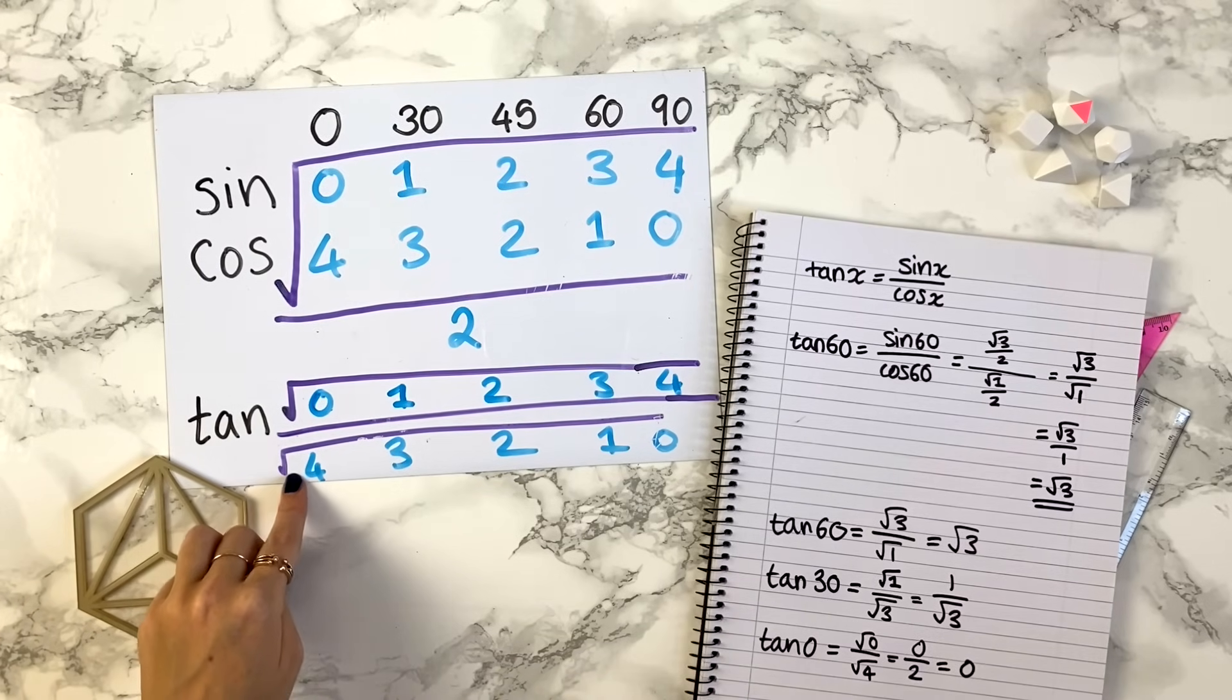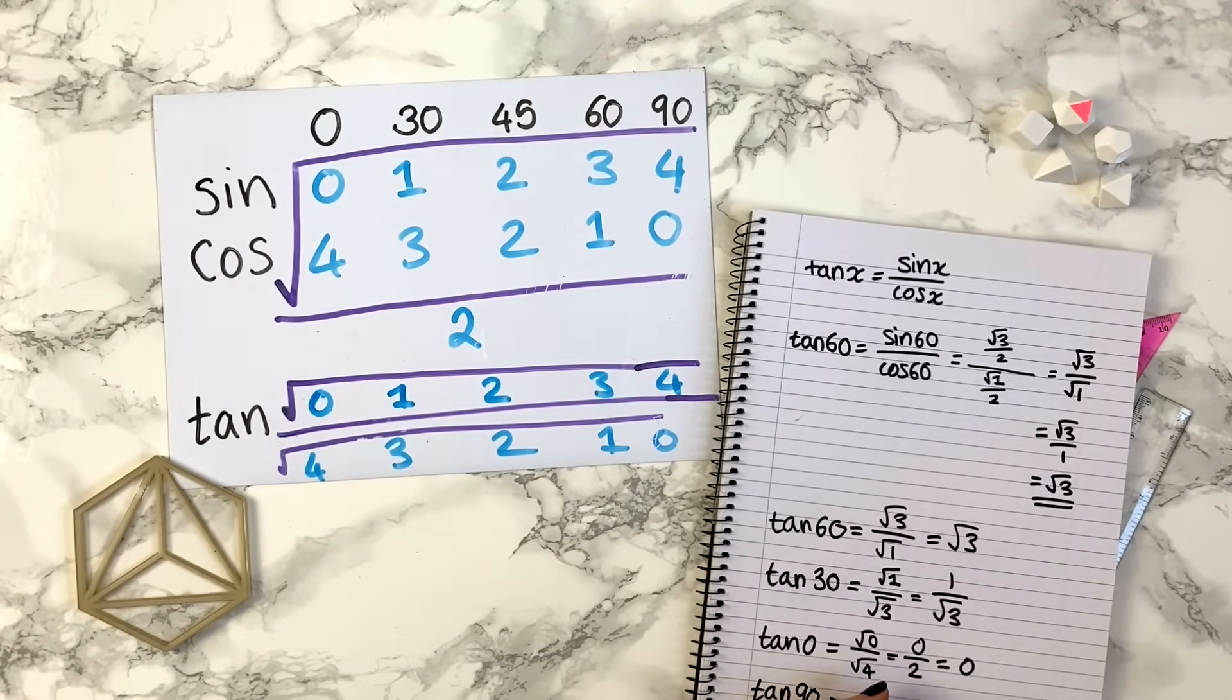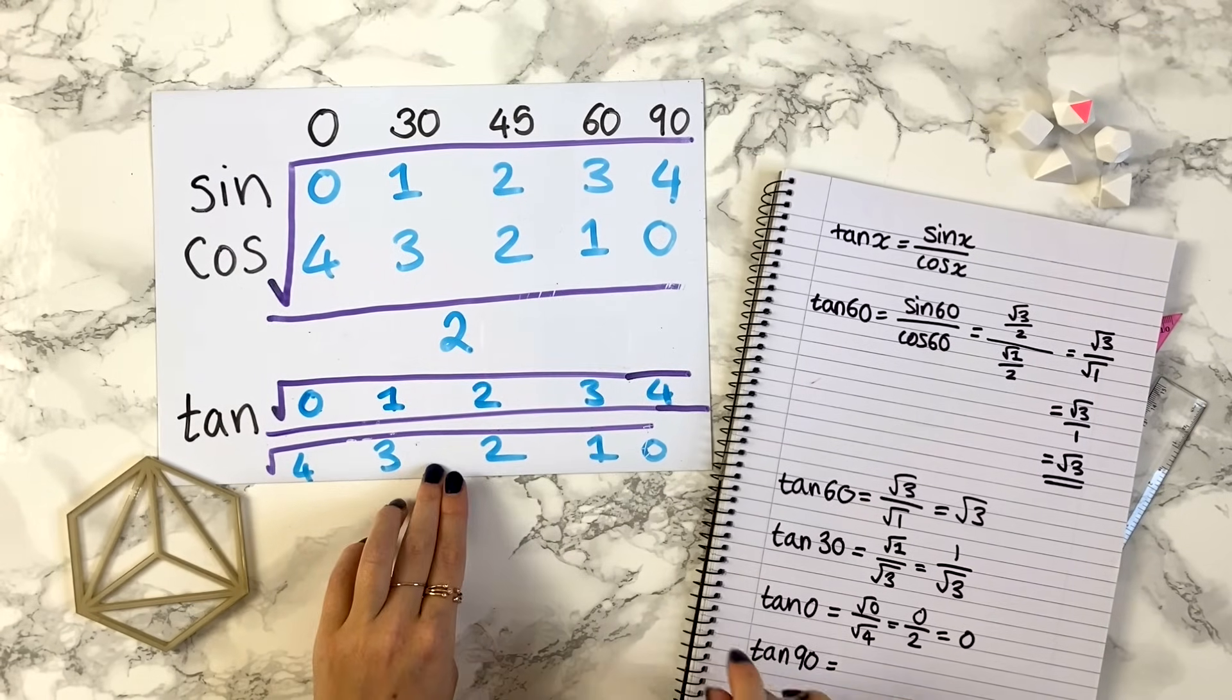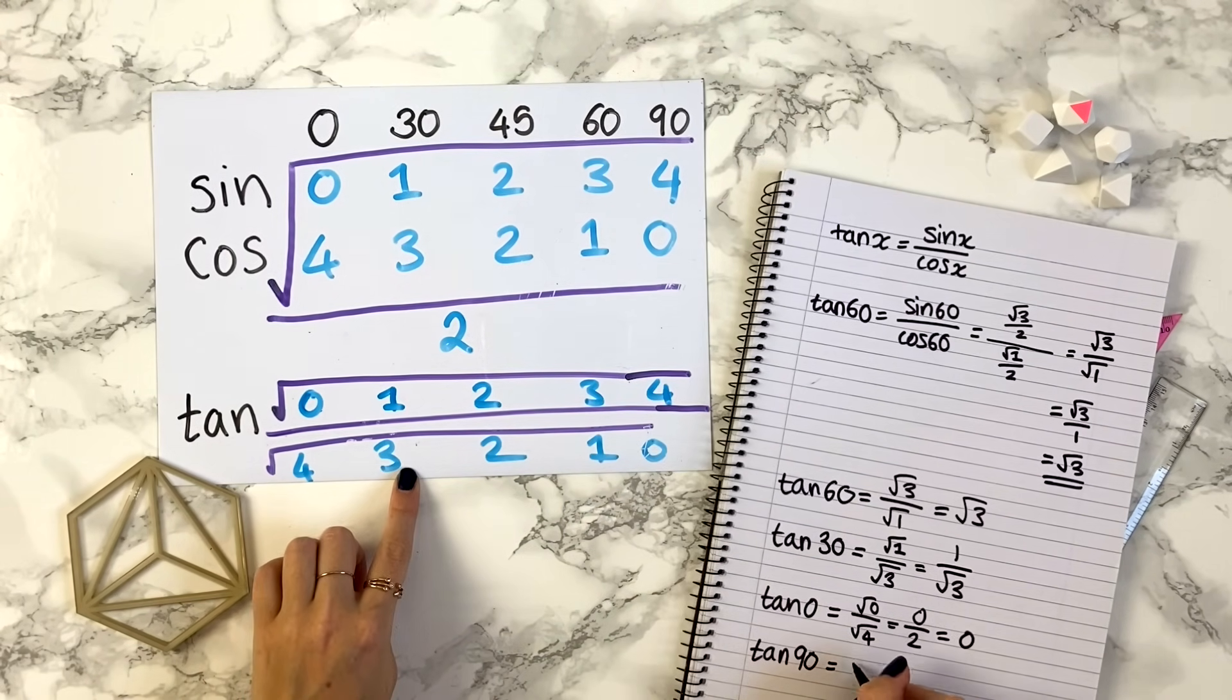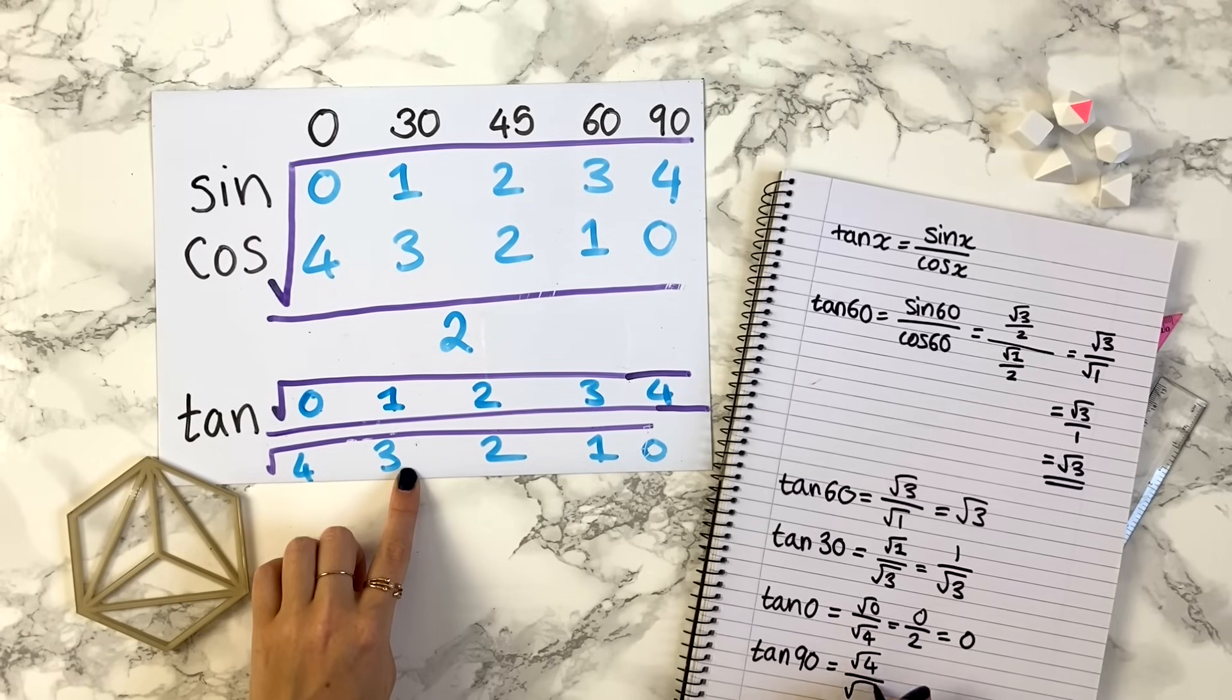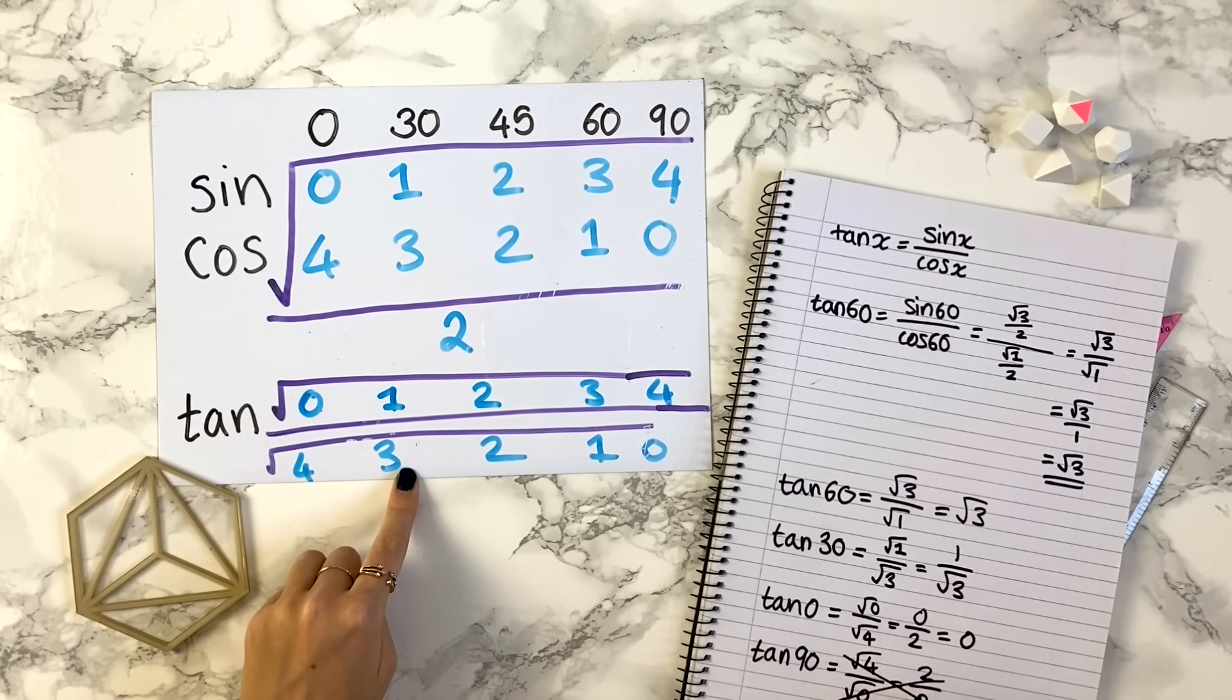And notice, actually, if we do tan of 90, tan of 90, this diagram tells us that it's going to be the square root of 4 divided by the square root of 0. Now this is the same as 2 divided by 0, and you can't divide by 0, so this really isn't quite the right thing to write down.